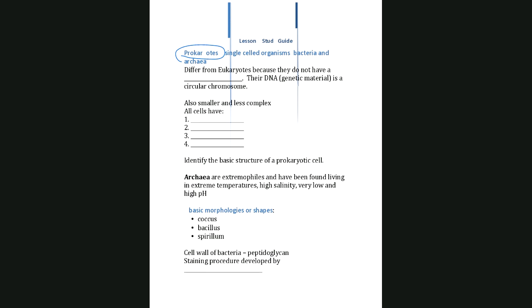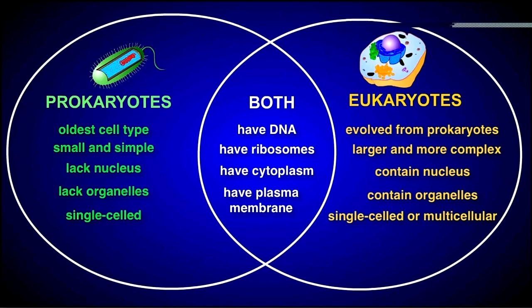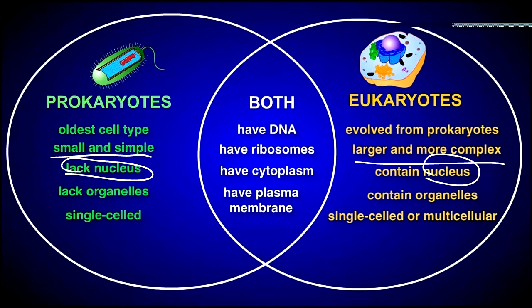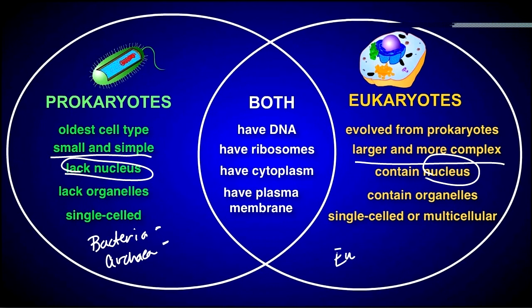Lesson three is about prokaryotes. The big difference between prokaryotes and eukaryotes is whether or not they have a nucleus — eukaryotes have a nucleus, prokaryotes do not. Eukaryotes are larger and more complex; prokaryotes are smaller and simpler. Both Bacteria and Archaea are domains of prokaryotic cells. Eukarya is the only domain made up of eukaryotic cells.